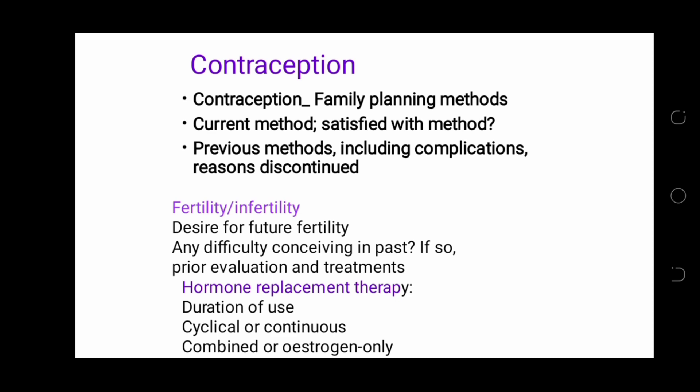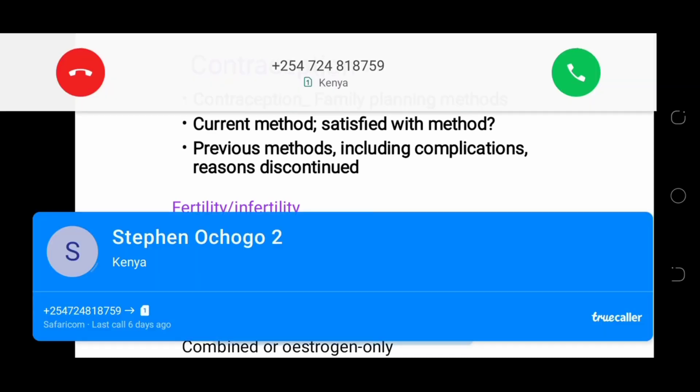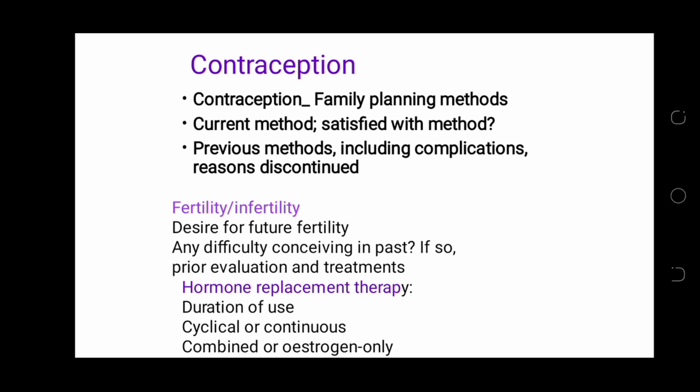Contraception history — ask about family planning methods used, which current methods are being used, whether the patient is satisfied with the method, previous methods including complications, and reasons for discontinuation. Fertility or infertility history — ask about desire for future fertility, any difficulty conceiving in the past, and if so, prior evaluation and treatment.